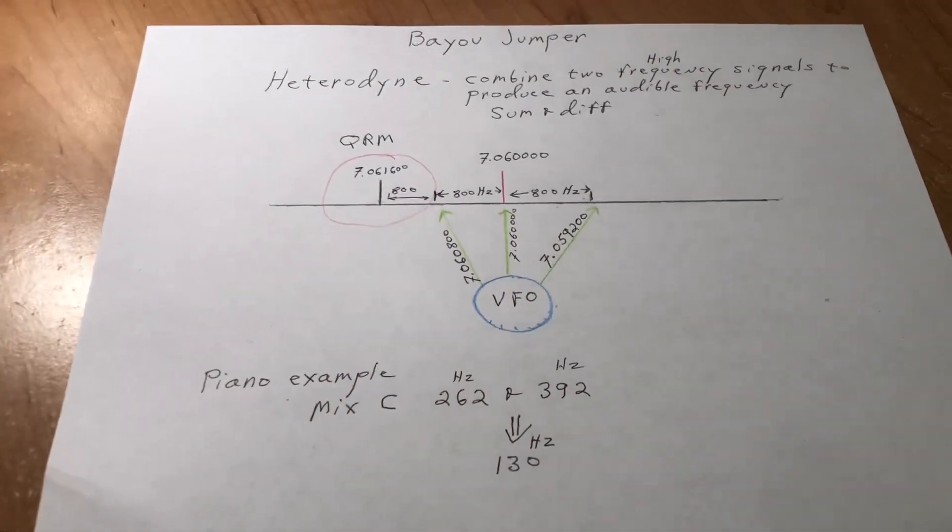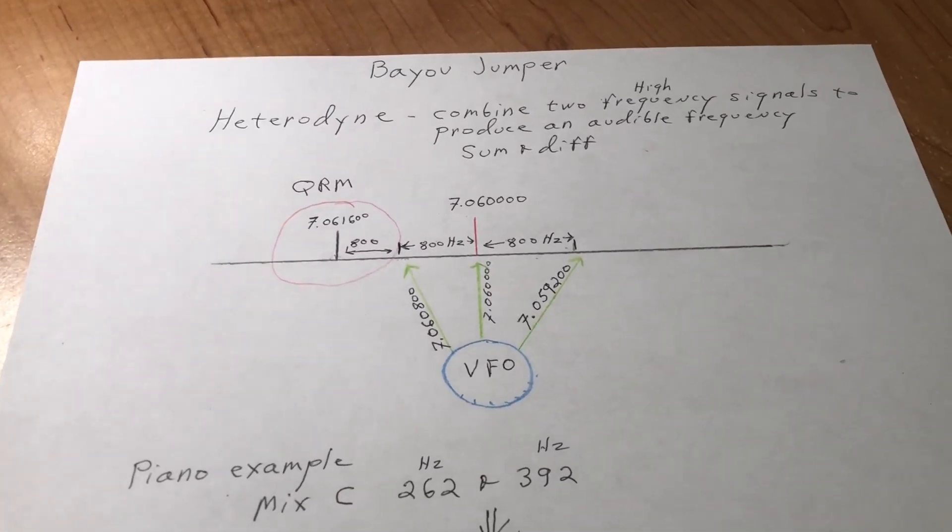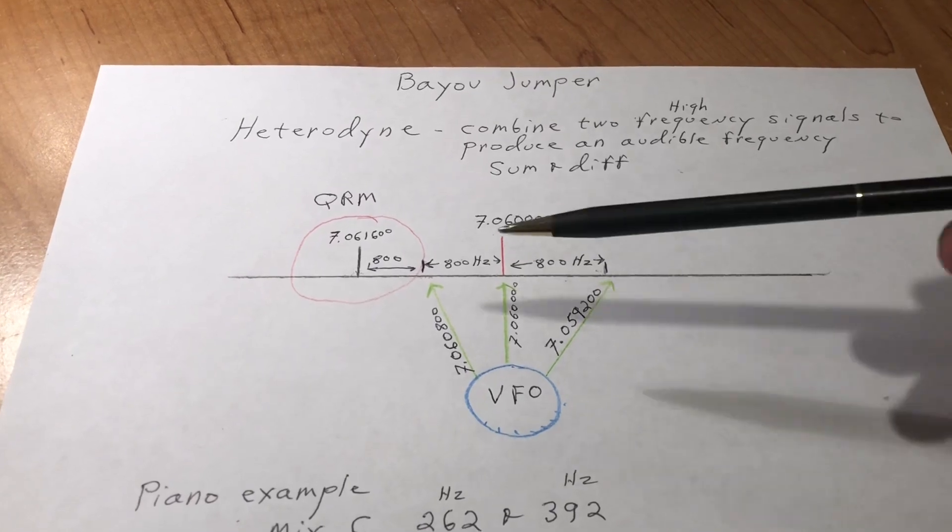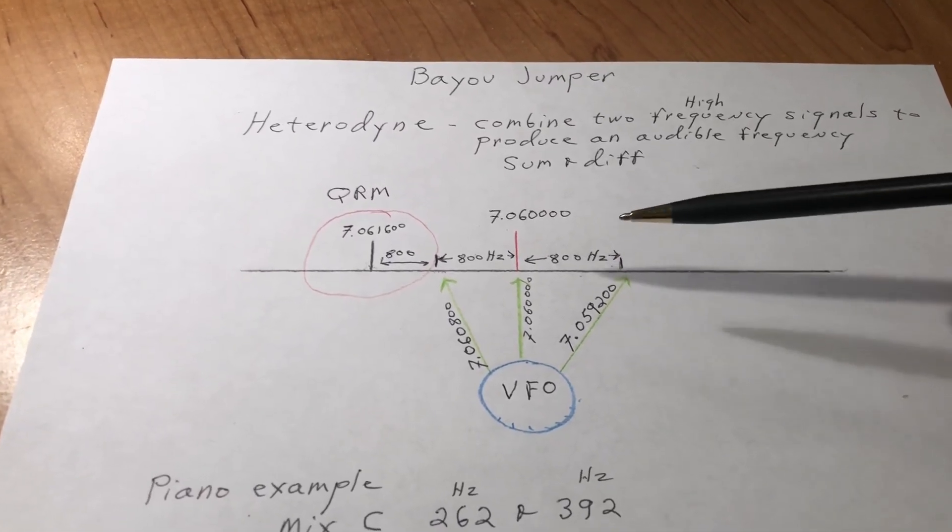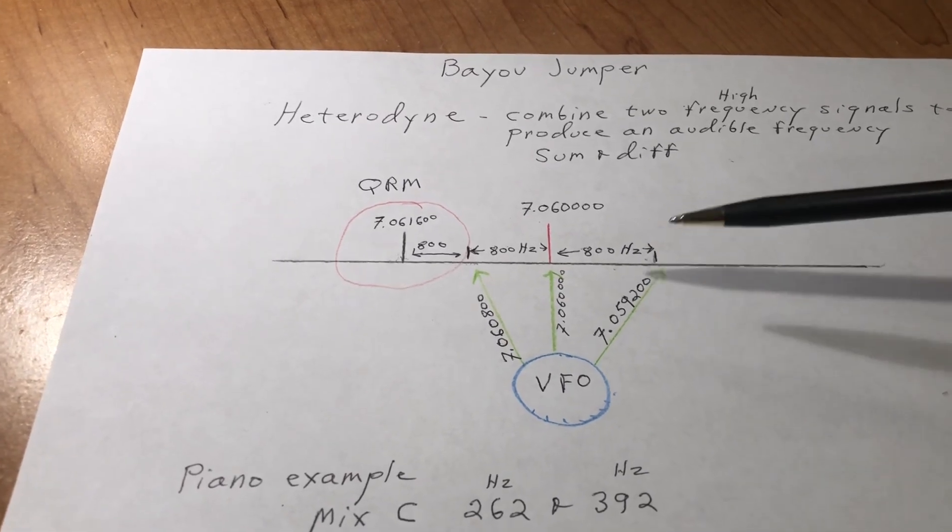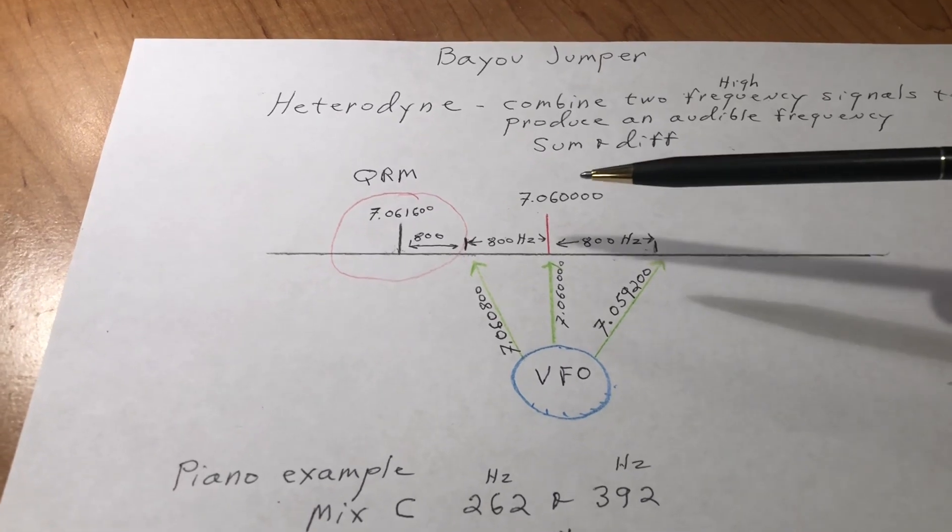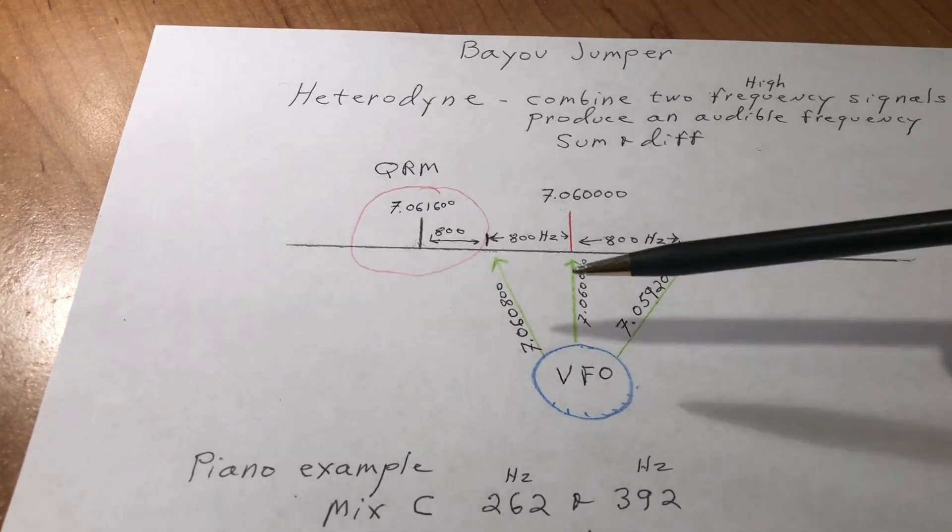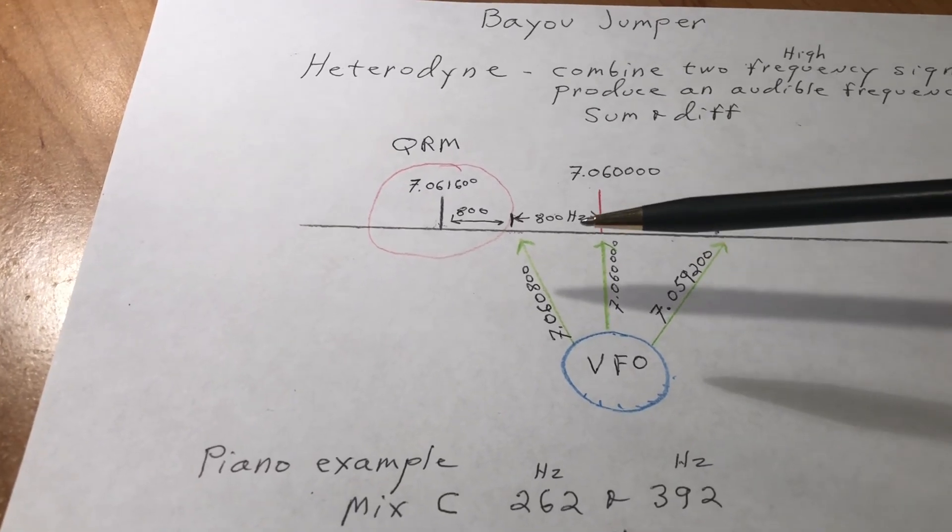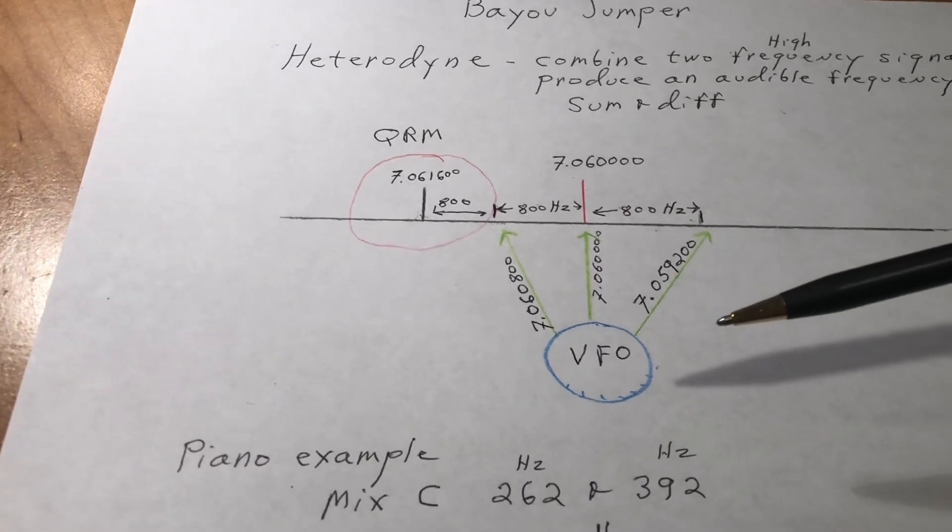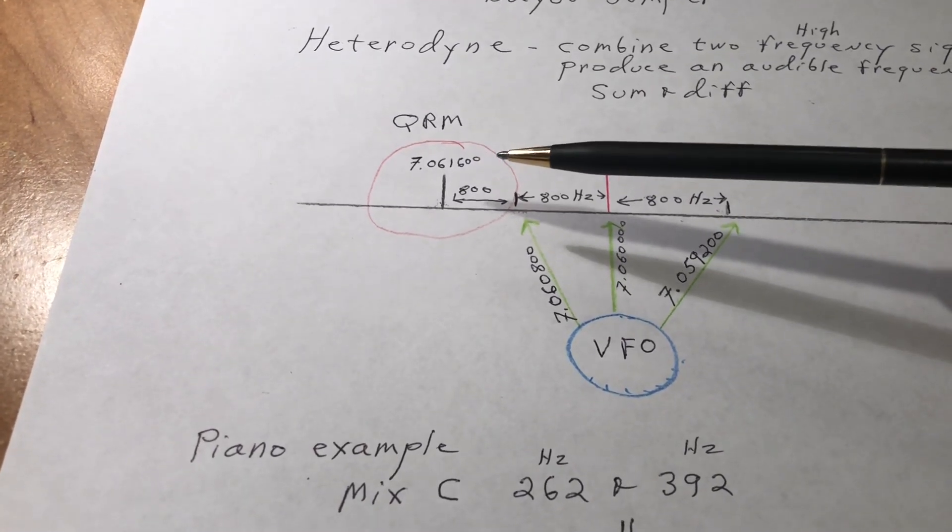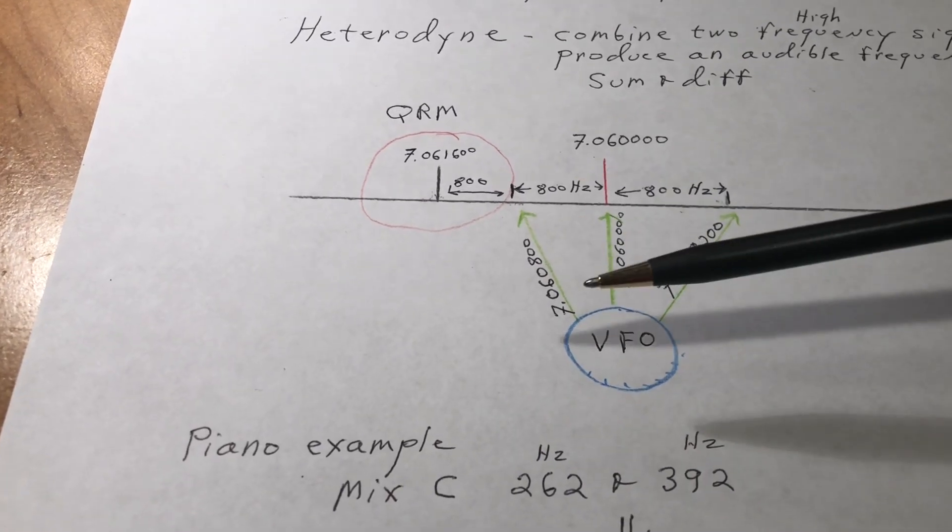Okay, we're back to the drawing board. So I added some QRM here. Because the Bayou Jumper doesn't have any filters and will listen to both upper and lower sideband, both sides, that creates a problem. And there is a way to get around that. So let's say you're listening to someone sending you CW at 7.061600 and your VFO is set to 7.060800. You're sitting there listening to a nice 800 hertz signal. Then this guy over here decides to start sending CQ and he's at 7.061600.